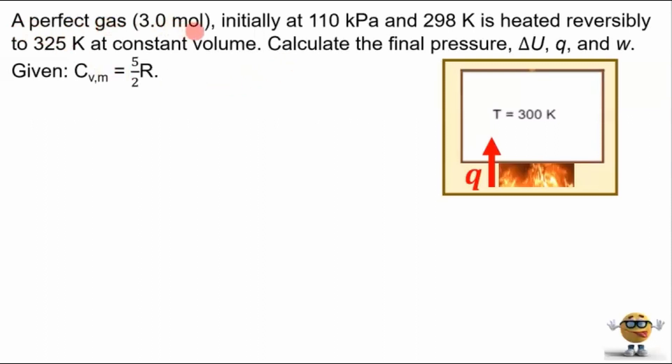So we have a perfect gas, 3.0 moles, initially at 110 kilopascals and 298 Kelvin is heated reversibly, that's important, to 325 Kelvin at constant volume, so that's also important. And the question is asking us to calculate the final pressure, change in internal energy, energy transferred as heat, and the work. And we're given the heat capacity under constant volume, that's what that V is, and M means it's the molar heat capacity at constant volume, equals 5 over 2 R.